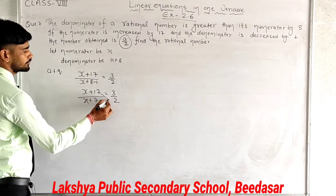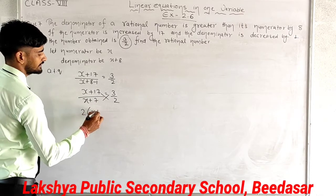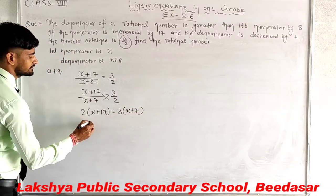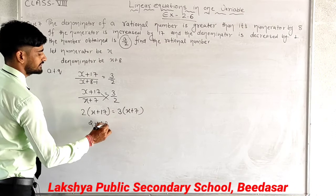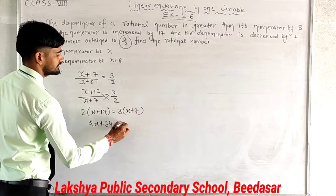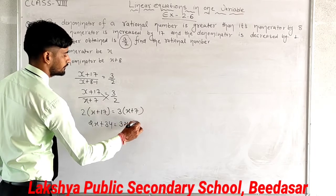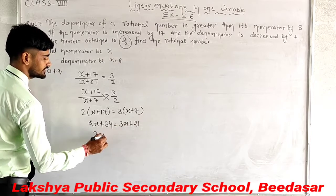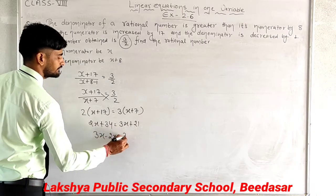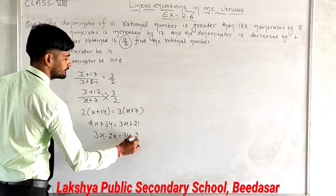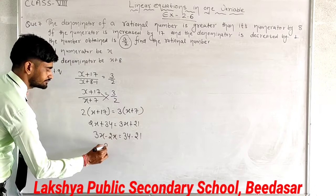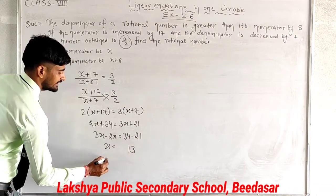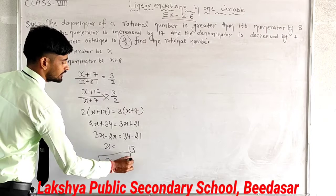Now cross multiply: 2 into (x plus 17) and 3 into (x plus 7). This gives 2x plus 34 equals 3x plus 21. Separating variables: 3x minus 2x equals 34 minus 21. So x equals 13.